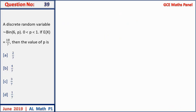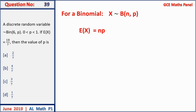Question 39: a discrete random variable follows a binomial distribution with parameters n = 6 and p. If E(X) = 18/7, find p. Using E(X) = np: 6p = 18/7, so p = 18/(7×6) = 3/7. Answer C.